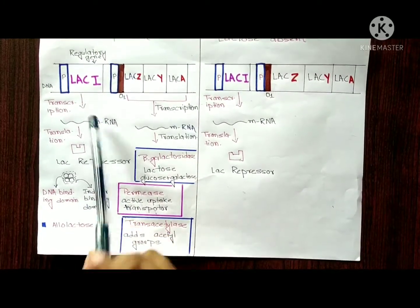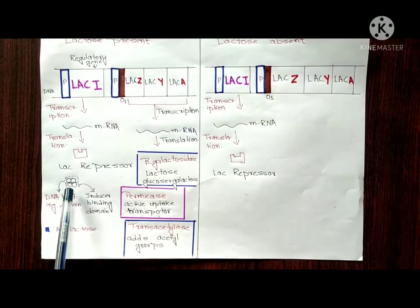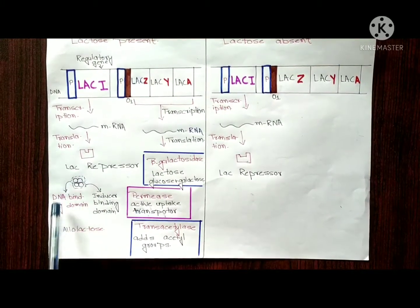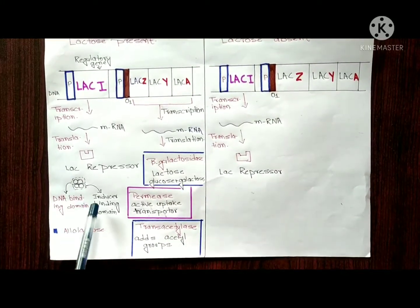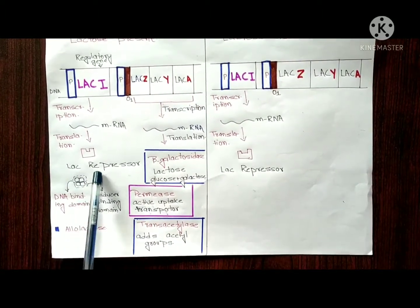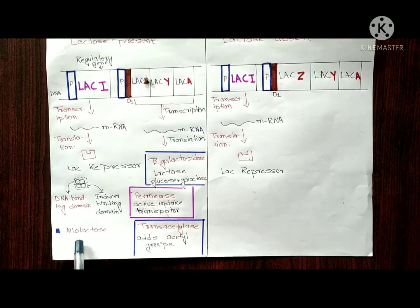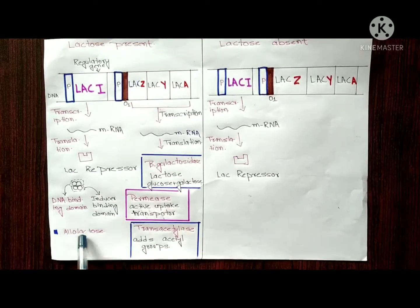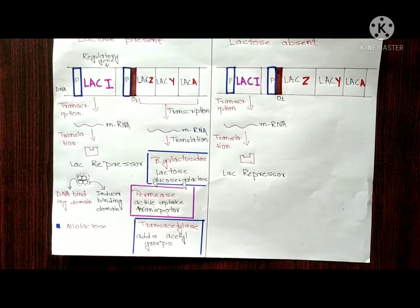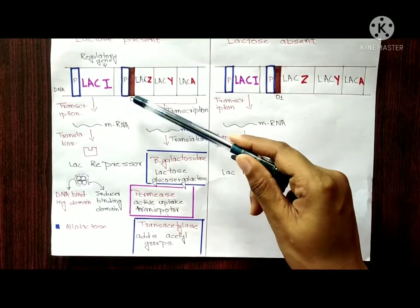This protein is called the lac repressor. The lac repressor is made of four subunits. Each subunit has a DNA-binding domain and an inducer-binding domain. When lactose is present, it is converted into a modified form called allolactose. Allolactose binds to the lac repressor, causing conformational changes so that the repressor can no longer bind to the operator.